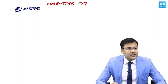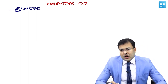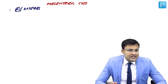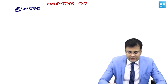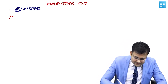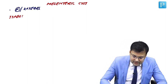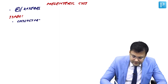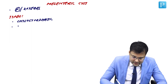What are the types of mesenteric cyst? The most common type is chylo-lymphatic. And what is the second most common type? It is enterogenous. So see the types of mesenteric cyst: most common type is chylo-lymphatic, and second most common type is enterogenous.